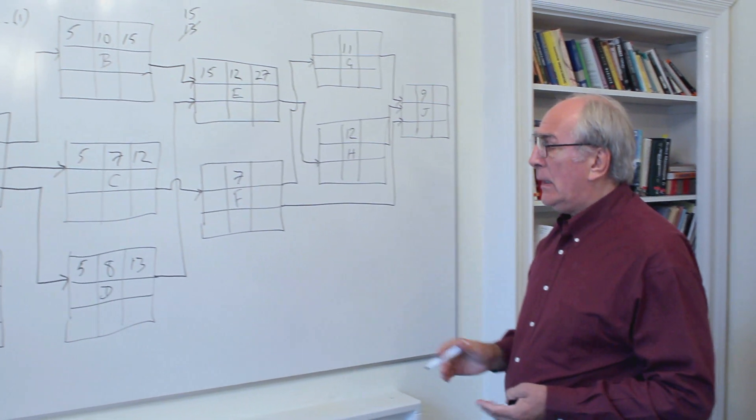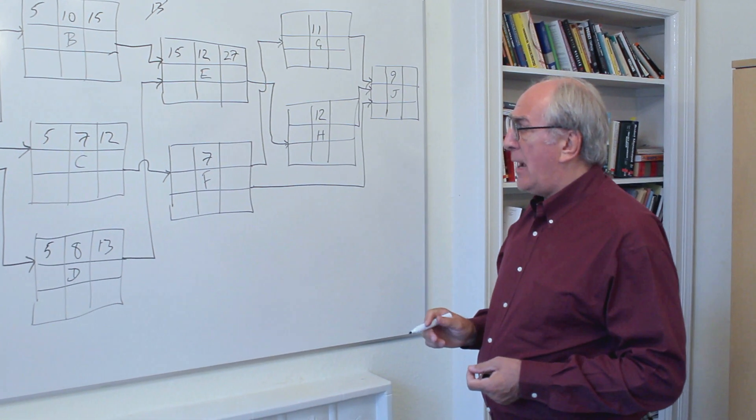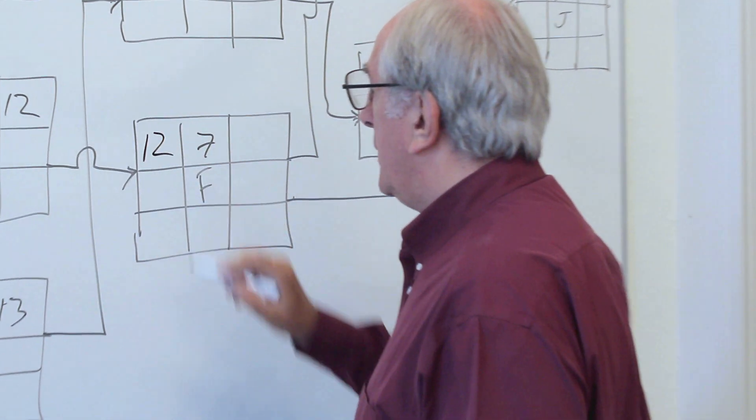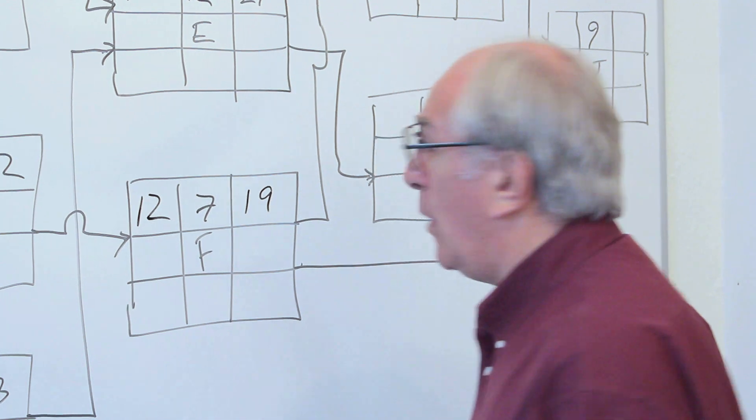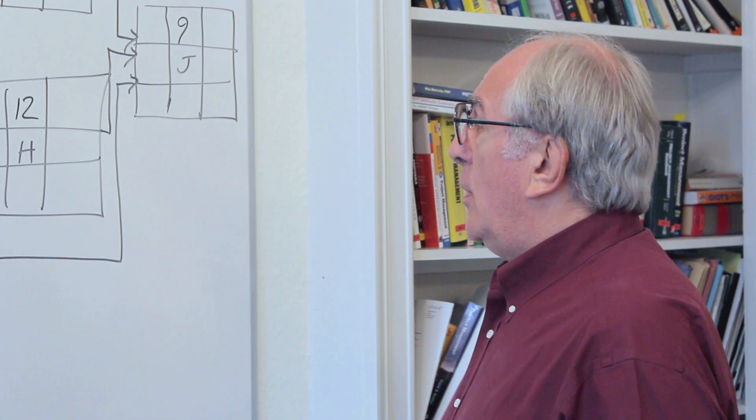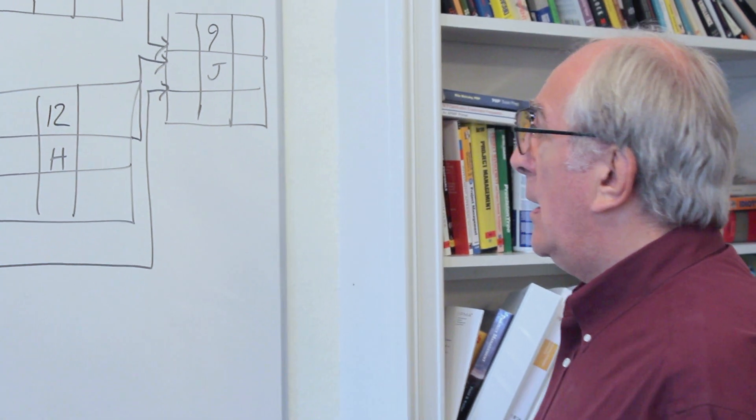Simply looking at activity F, there's only one activity driving that, that's C. So that early start is 12, giving us an early finish of 12 plus 7 equals 19.